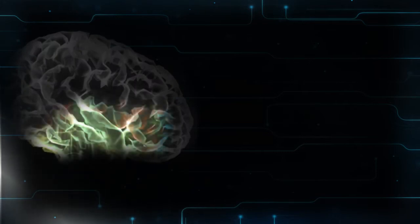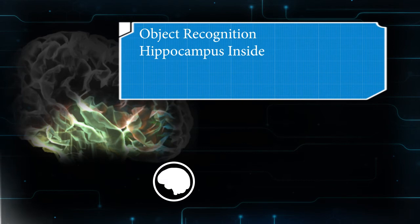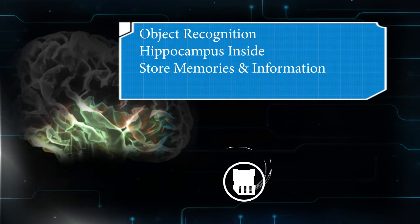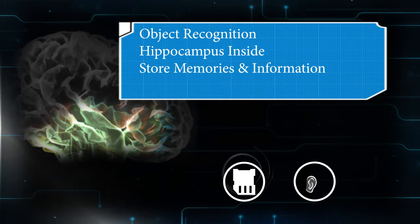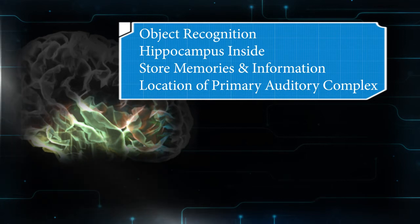The third lobe, the temporal one, is located on the bottom section of the brain. Its functions include object recognition, face and person recognition, hippocampus necessary for memory formation, storing memories and information from five senses, location of primary auditory complex, and interpreting sounds and language we hear.